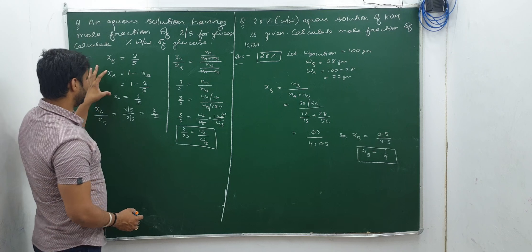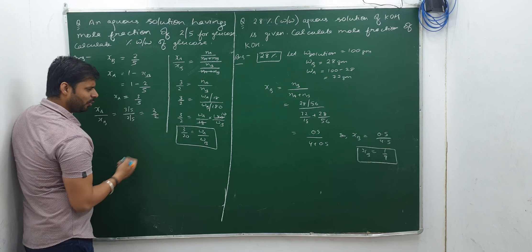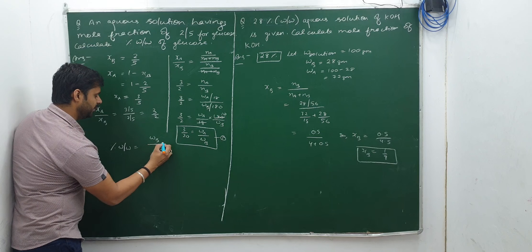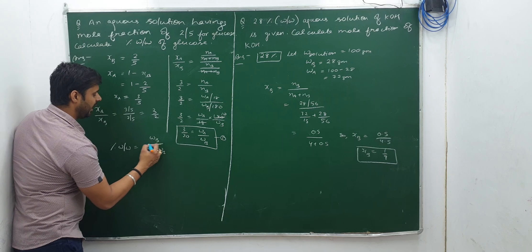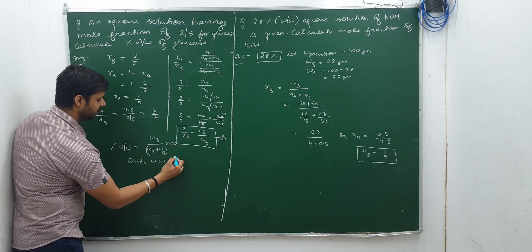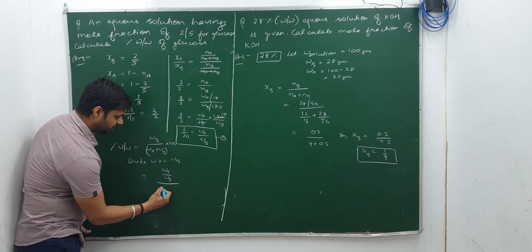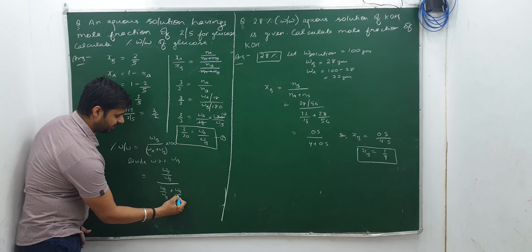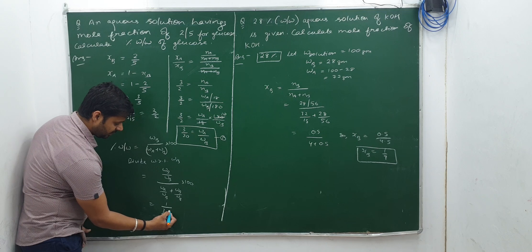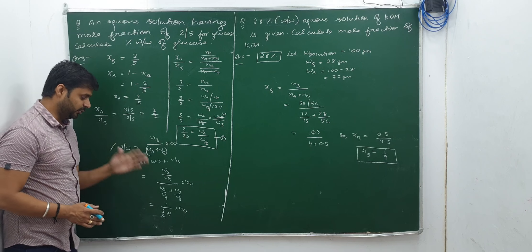So the ratio W_A / W_B = 3/20. Now percentage w/w = W_B / (W_A + W_B) × 100. Dividing numerator and denominator by W_B: = 1 / (W_A/W_B + 1) × 100 = 1 / (3/20 + 1) × 100. So we don't need to find W_A and W_B individually — we just use the ratio.